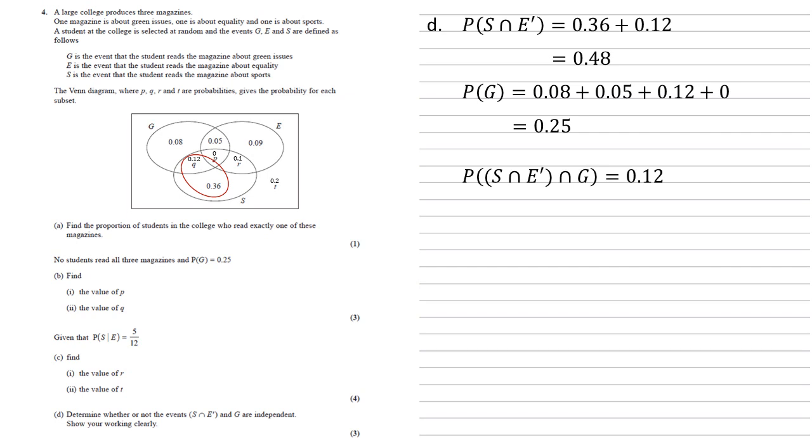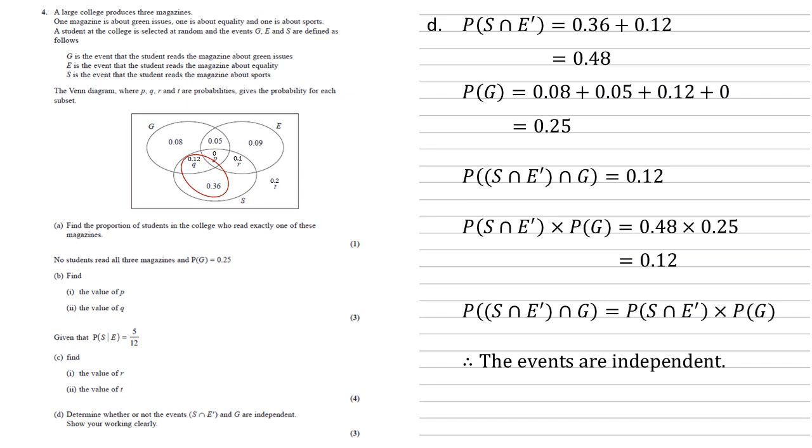Now, if we multiply our first two probabilities together, 0.48 times 0.25, we also get 0.12. So we've just shown that on our Venn diagram, the probability of the intersect of our two events is equal to the product of the two probabilities separately. But if that's the case, that means that the events are independent. So we've proved it.